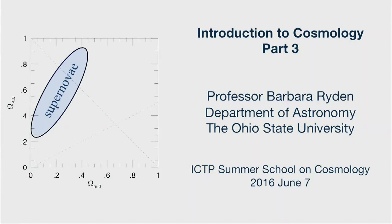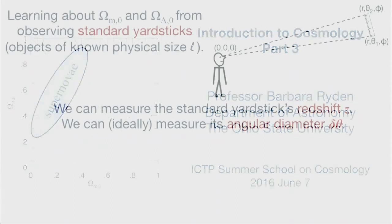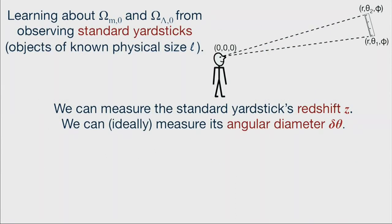We need another source of information containing information about omega-matter and omega-lambda in some other combination. That brings us to not standard candles — objects of known luminosity — but standard yardsticks, sometimes called standard rulers or standard meter sticks. These are simply objects whose physical size you know; that is, you know the proper distance from one edge to the other. Here's the observer looking at, in this case, an honest-to-god ruler at a co-moving coordinate distance r, with angular distance delta-theta between its ends.